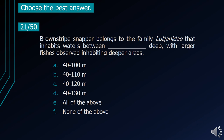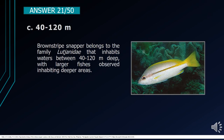Number 21. Brownstripe snapper belongs to the family Lutjanidae and inhabits waters between blank deep, with larger fishes observed inhabiting deeper areas. A. 40–100 m. B. 40–110 m. C. 40–120 m. D. 40–130 m. E. All of the above. F. None of the above. The correct answer is letter C, 40–120 m. Brownstripe snapper belongs to the family Lutjanidae and inhabits waters between 40–120 m deep, with larger fishes observed inhabiting deeper areas.